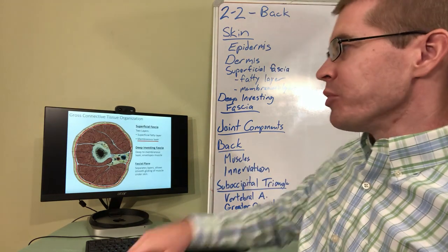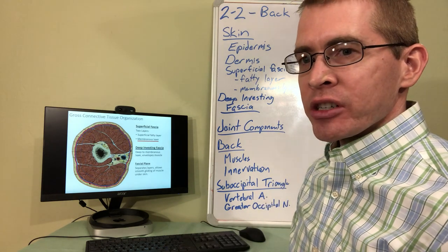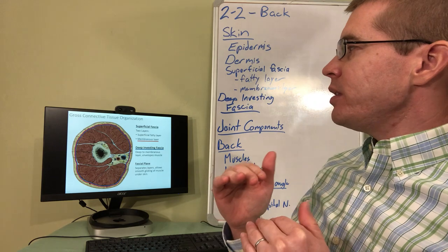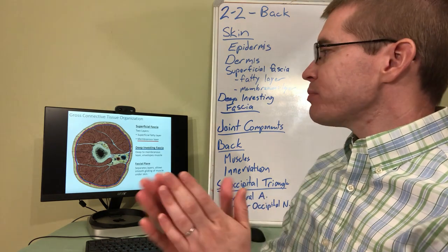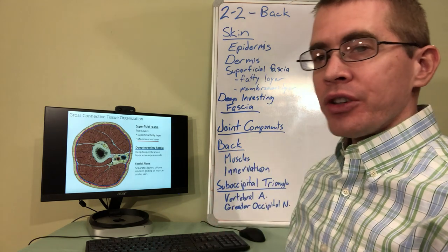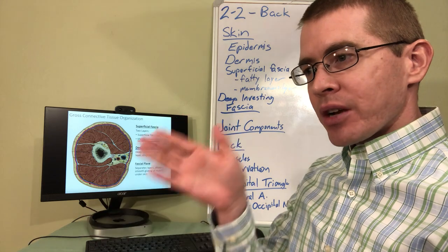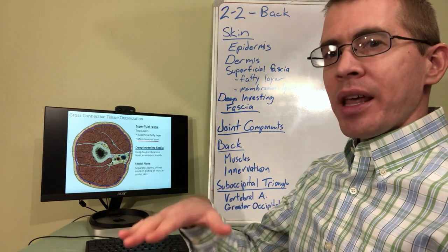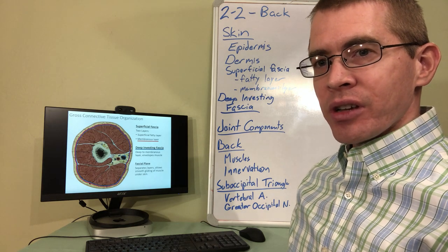Just deep to the fatty layer, outlined here in red, is the membranous layer. Deep to that membranous layer of superficial fascia is another layer called the deep investing fascia, shown here in blue. The deep investing fascia is another form of membranous fascia. Between the membranous layer of superficial fascia and the deep investing fascia is a potential plane. This plane allows smooth movement of muscles under the skin, and in dissection we can use it to easily remove the skin and expose the muscles and the larger branches of arteries, veins, and nerves.